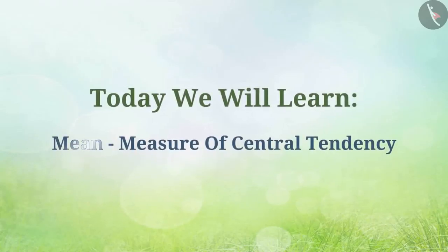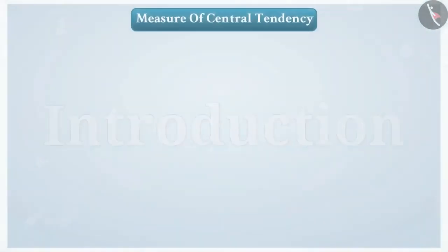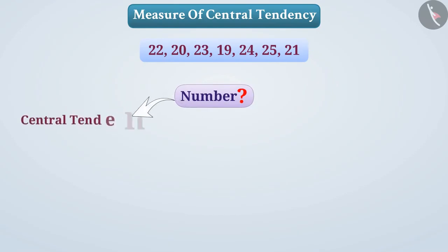We'll learn about mean as a measure of central tendency. To represent a group of numbers, many times we need an appropriate number that represents a group of observations. Such a number is called the central tendency of the group.